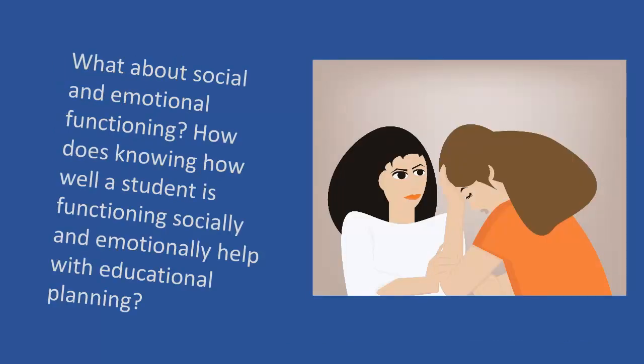Let me restate the question to make sure I'm understanding. You asked: what about social and emotional functioning? How does knowing how well students are functioning socially and emotionally help with educational planning? In general, advanced learners do very well socially and emotionally, so in most cases there's no need to treat them as having special social and emotional needs.